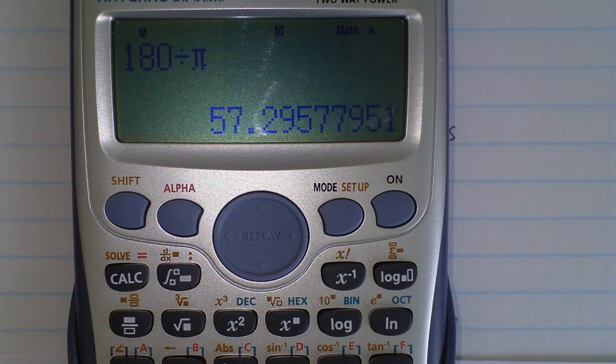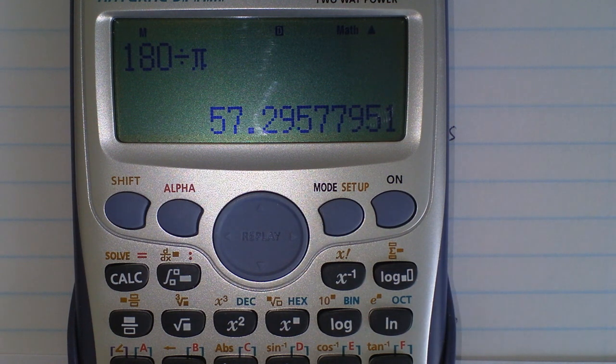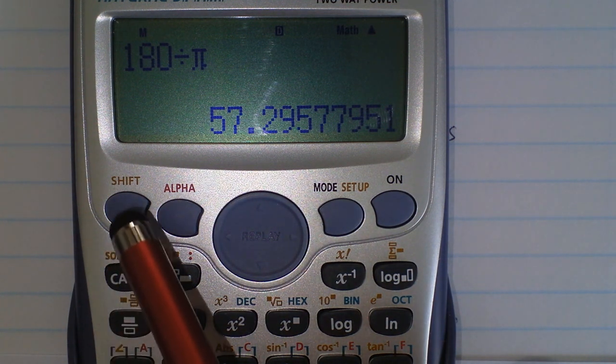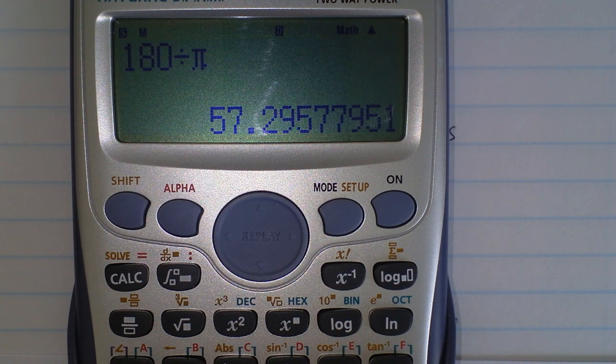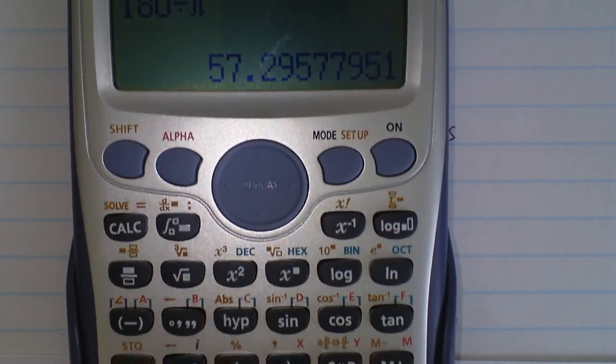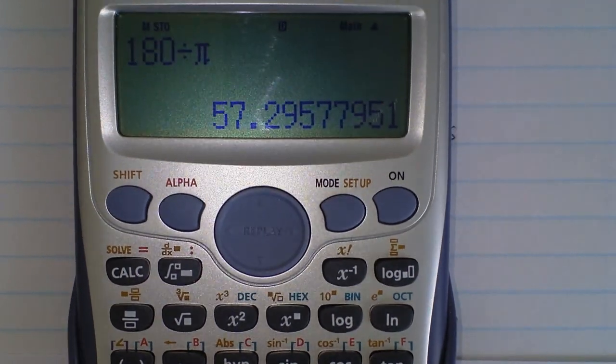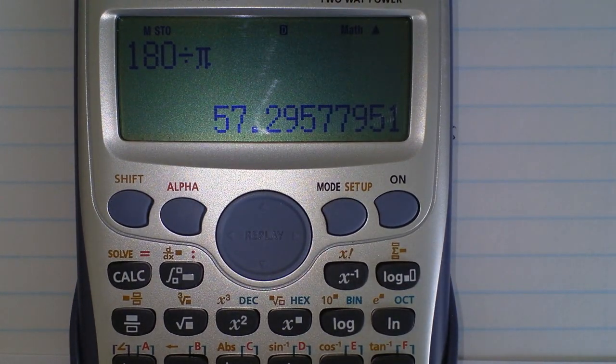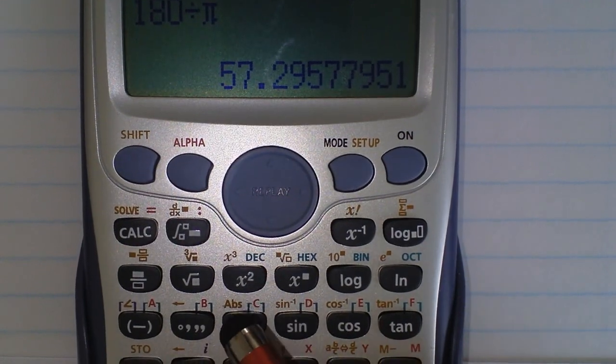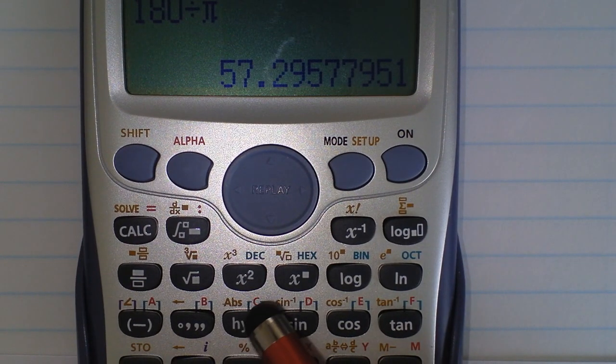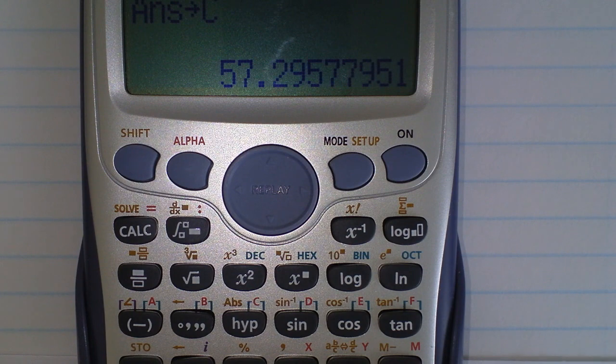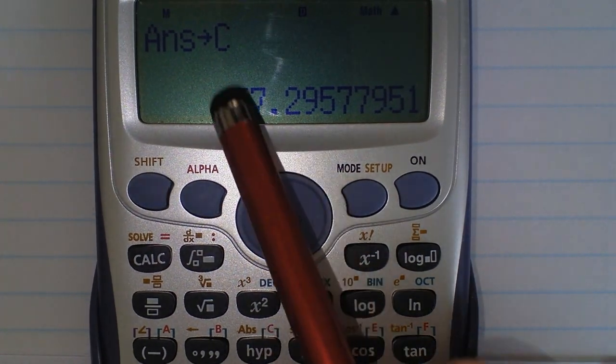Let's store that into the memory. To store it you need to press the shift and the store button, and the store button is just here. Going to put this into memory bank C, so that is just this one here—you see the C in the register above. Press that and it just confirms that that is now stored in memory bank C.